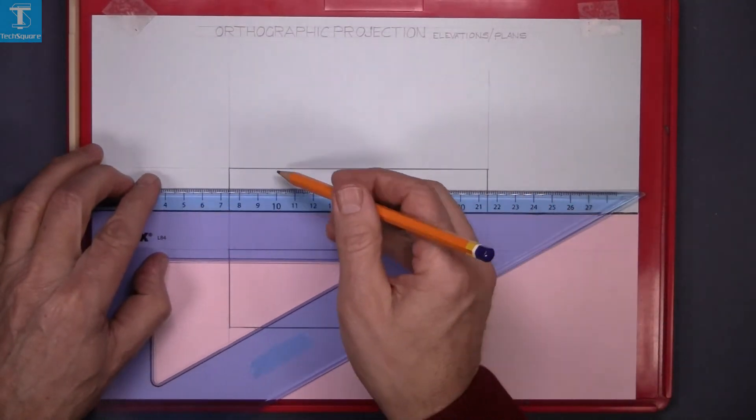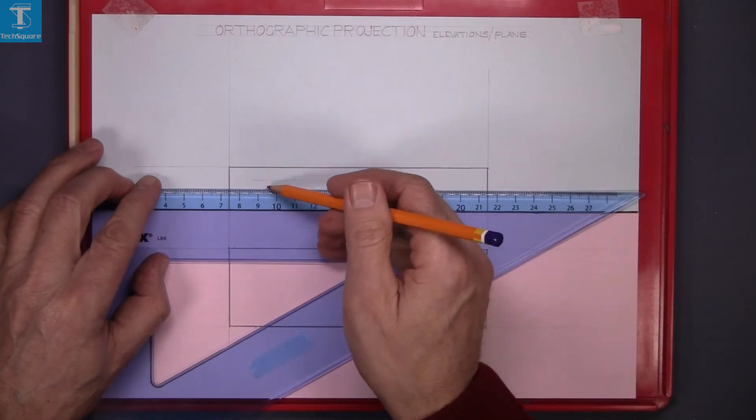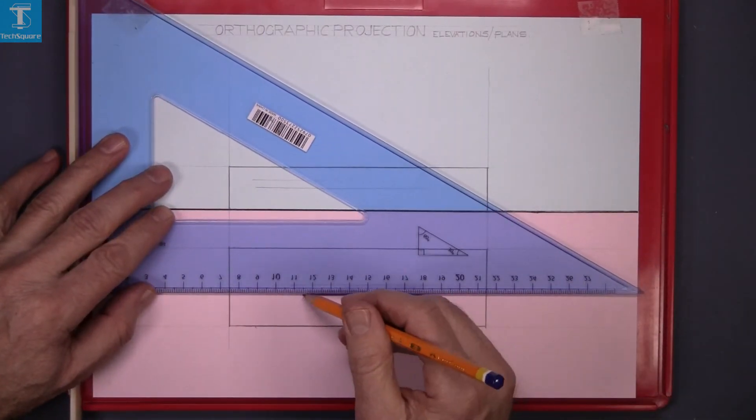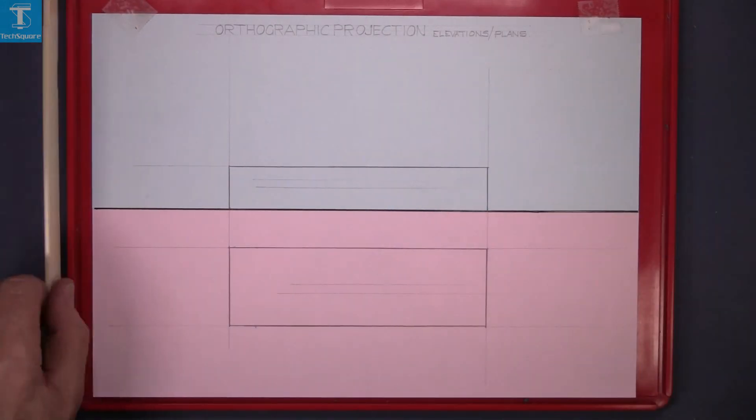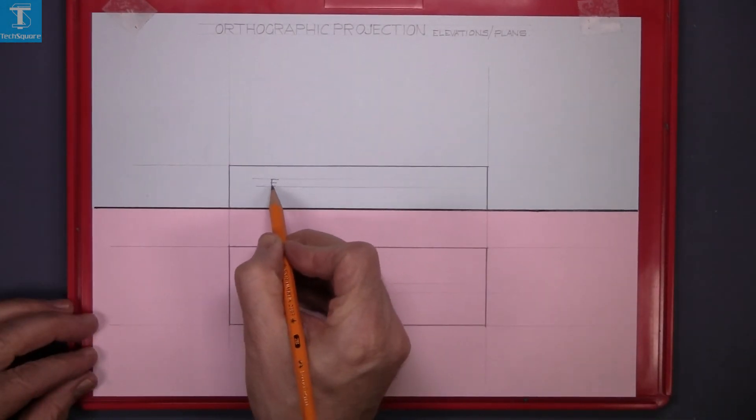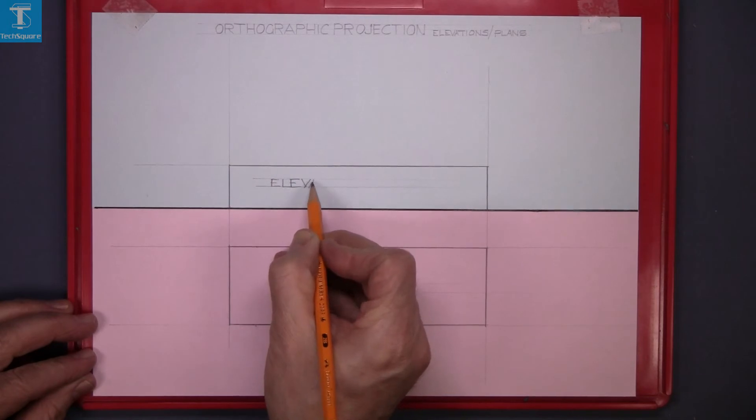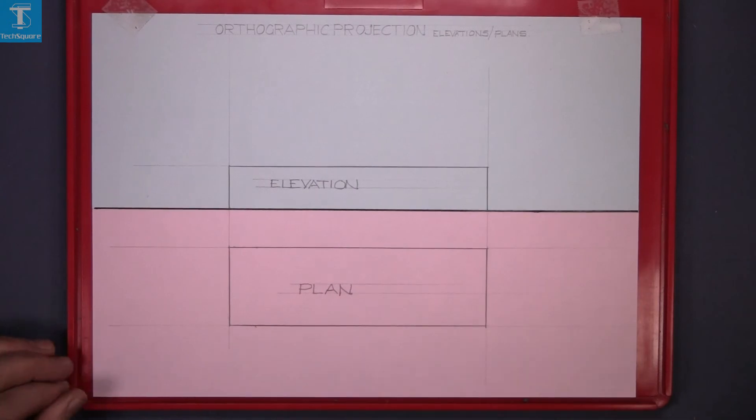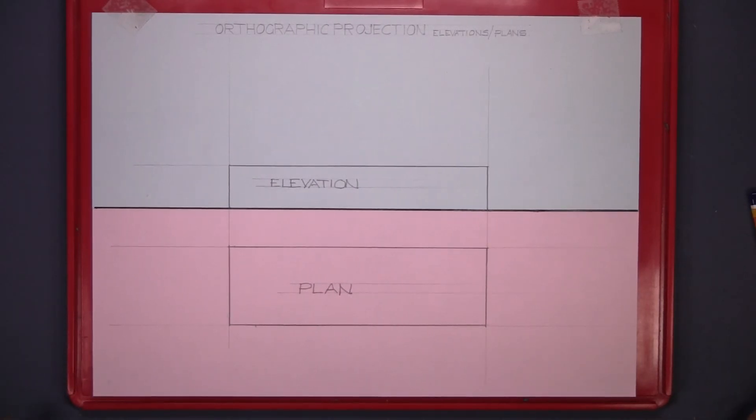Now we'll write in 'elevation' here and 'plan' here. E-L-E-V-A-T-I-O-N and P-L-A-N. That's your first exercise in orthographic projection complete.